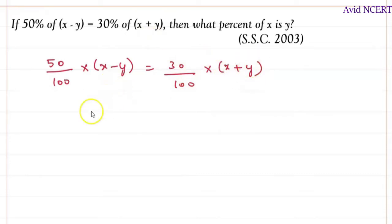So simplifying this, we can have x minus y on the left hand side. x minus y equals 30 by 100 times x plus y, and 50 by 100 goes on the other side becomes 100 by 50.